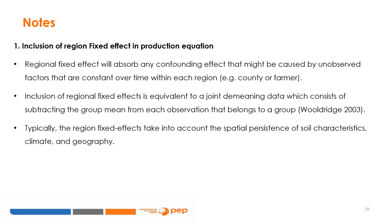Particular attention should be paid to the following elements. The inclusion of the region fixed effect in the production equation: the regional fixed effect will absorb any confounding effect that might be caused by unobserved factors that are constant over time within each region, for example, county or farmer. The inclusion of regional fixed effects is equivalent to a joint demeaning of the data, which consists of subtracting the group mean from each observation that belongs to a group. Typically, the region fixed effect considers the spatial persistence of soil characteristics, climate, and geography.